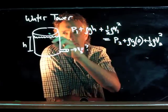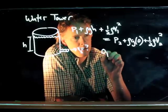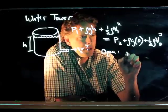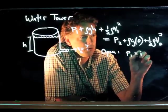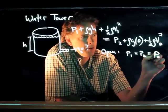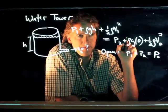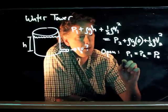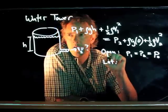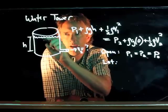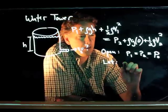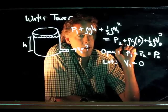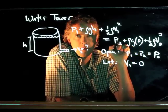If this thing is open at the top and at the bottom, then P1 equals P2 equals atmospheric pressure P0. Likewise, the motion of the water at the top means that it's not moving very fast — we can approximate V1 as zero.